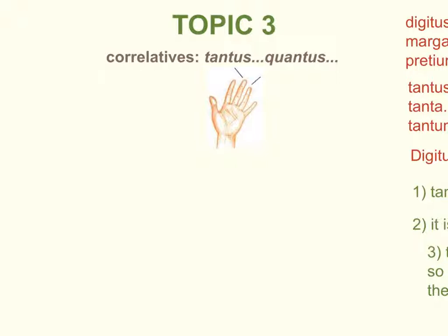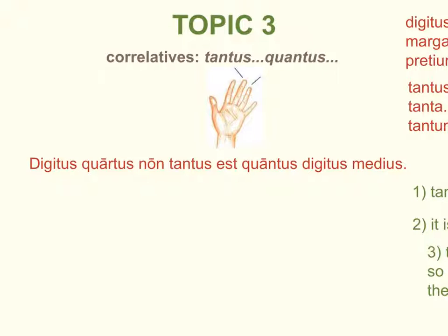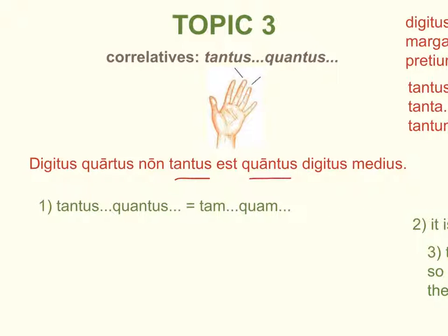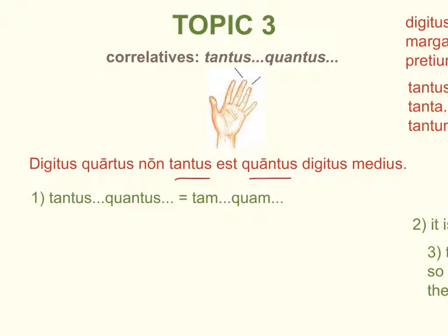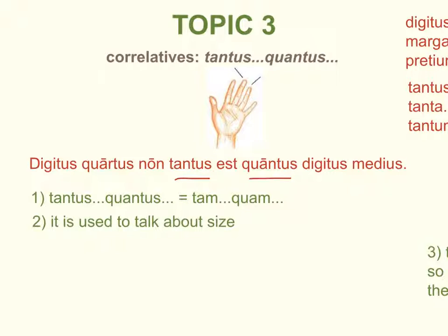Our final topic is the correlative tantus-quantus. For example: Digitus quartus non tantus est quantus digitus medius. Tantus-quantus is essentially the same in meaning as tam-quam, but is strictly used to talk about size. The fourth finger is not as big as the middle finger — so tam-quam means 'as … as,' and tantus-quantus means the same thing, specifically for size.